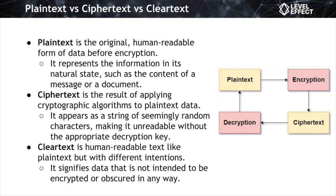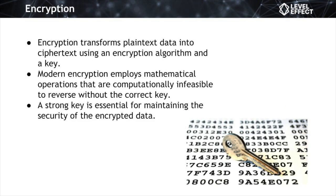Ciphertext ensures that even if intercepted, the actual content remains confidential to those without the proper decryption key. Clear text closely resembles plain text in terms of human readability but differs in intent: plain text represents unencrypted data, while clear text specifically signifies data that is not meant to be encrypted or concealed. Clear text is data shared or transmitted without any deliberate protection mechanisms.